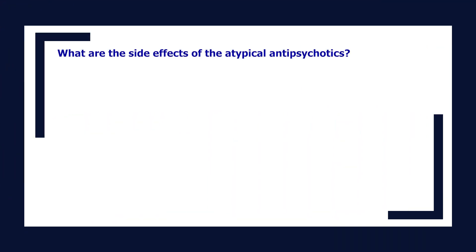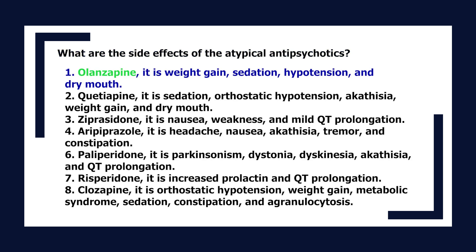What are the side effects of the atypical antipsychotics? For olanzapine: weight gain, sedation, hypotension, and dry mouth. For quetiapine: sedation, orthostatic hypotension, akathisia, weight gain, and dry mouth. For ziprasidone: nausea, weakness, and mild QT prolongation. For aripiprazole: headache, nausea, akathisia, tremor, and constipation. For paliperidone: Parkinsonism, dystonia, dyskinesia, akathisia, and QT prolongation. For risperidone: increased prolactin and QT prolongation. For clozapine: orthostatic hypotension, weight gain, metabolic syndrome, sedation, constipation, and agranulocytosis.